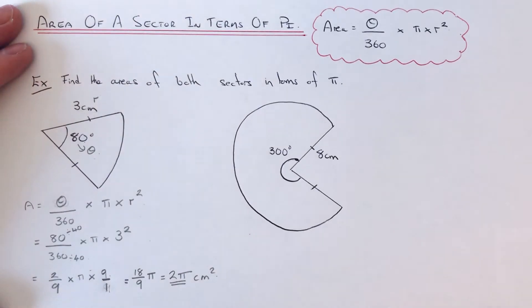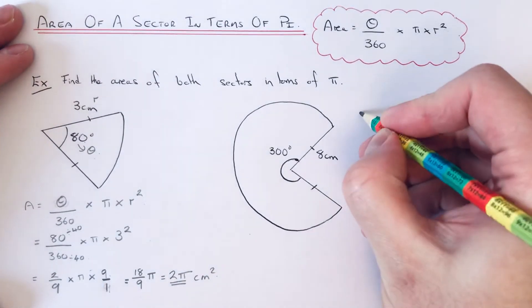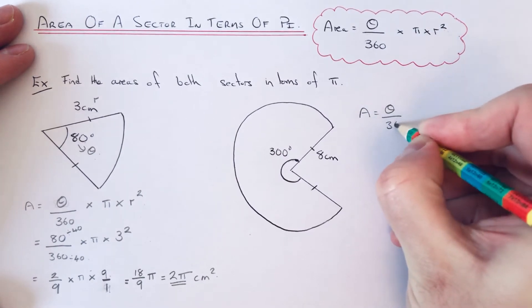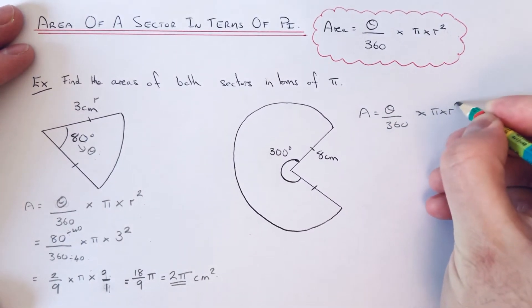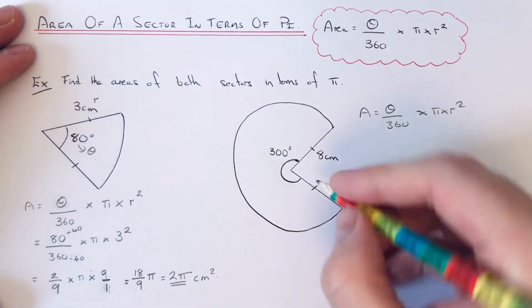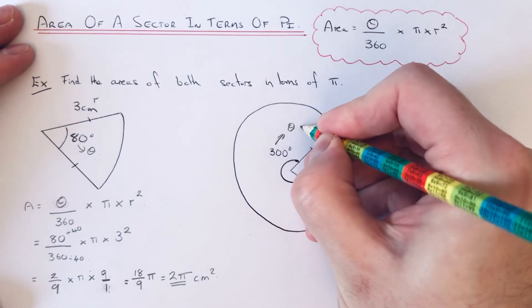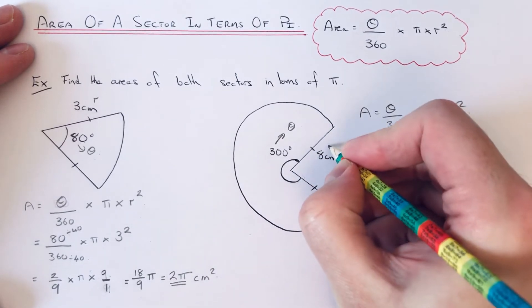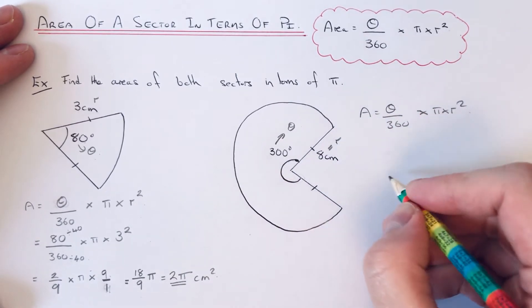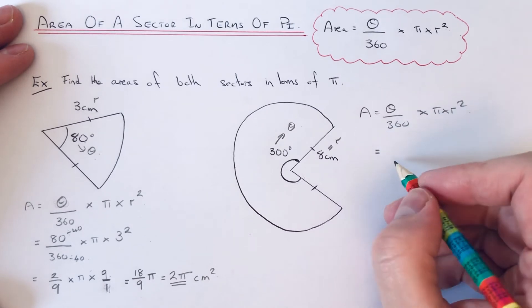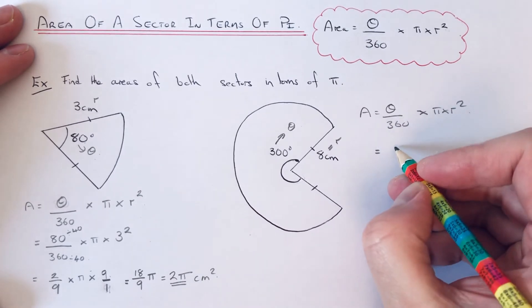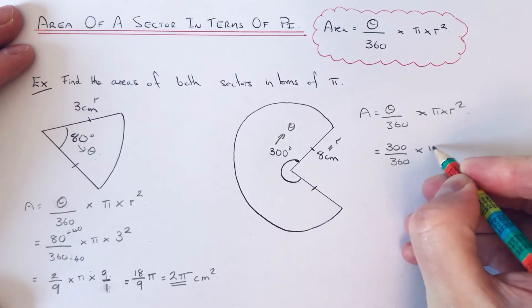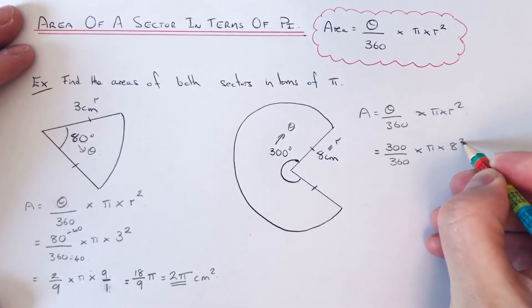Let's move on to our second example. The formula is theta over 360 times pi times r squared. So theta this time is 300. That's the angle inside the sector. And our radius is 8. If we substitute these into our formula, it would be 300 over 360 times pi times 8 squared.